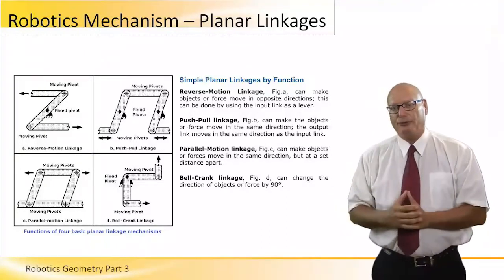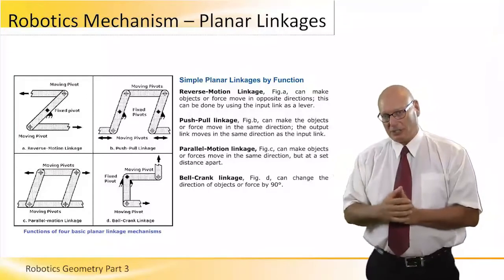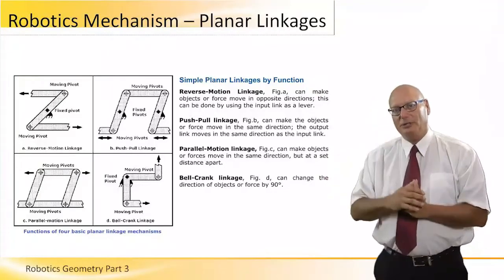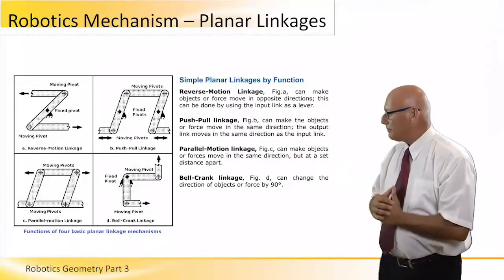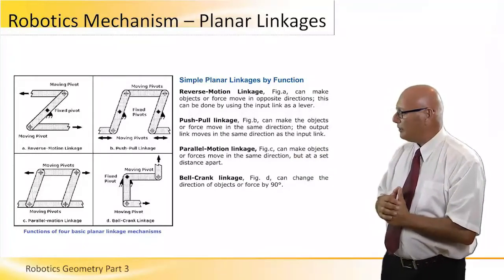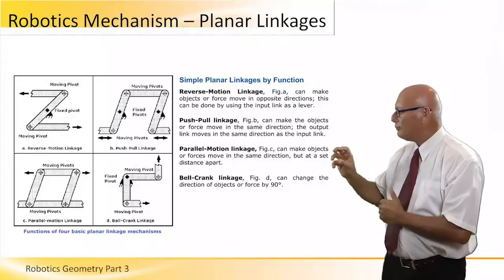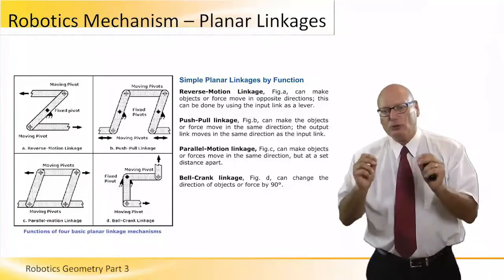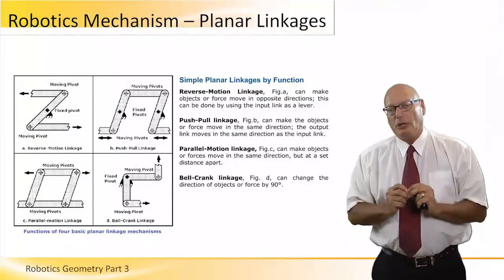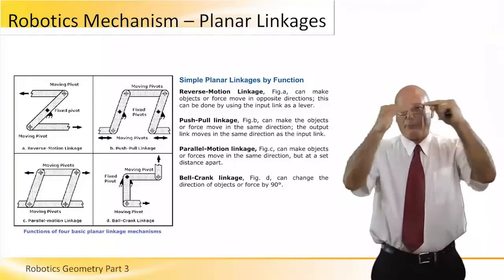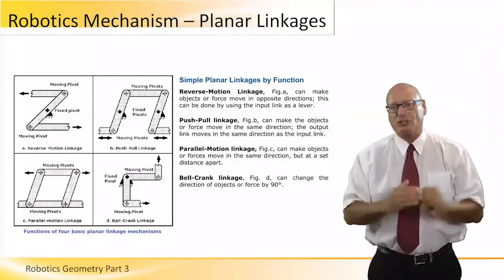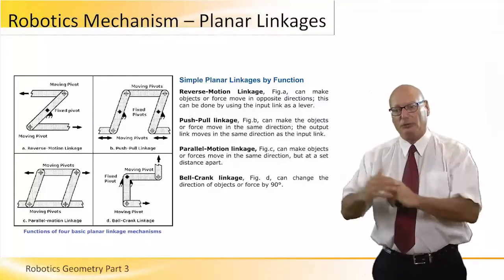Another type of planar linkage on the 2D plane is picture B on the top right: push-pull linkage. We have two pivots in the center, and if we move the bottom part, the top fork will move in the reverse action but parallel to the top.